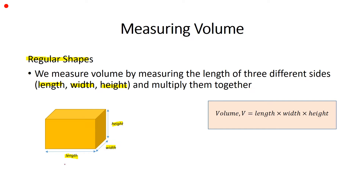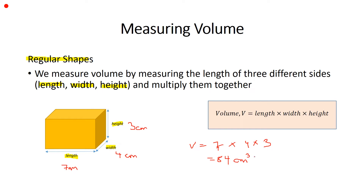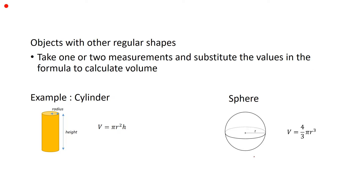So let's say the length of this cuboid is 7 cm, the width is 4 cm, and the height is 3 cm. To calculate the volume, we substitute into the formula: volume equals length times width times height, and we get 84 cm cubed as the volume of this cuboid. For objects with other regular shapes, we usually take one or two measurements and substitute the values into the formula to calculate volume.